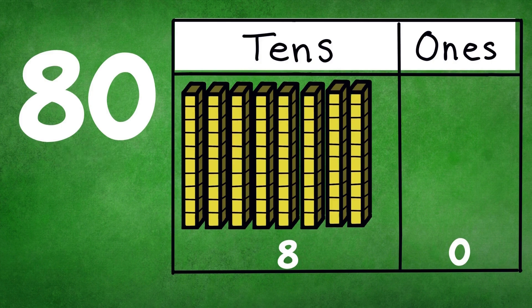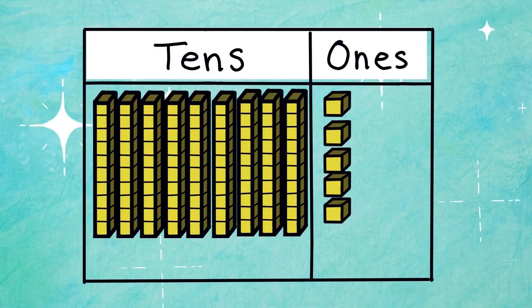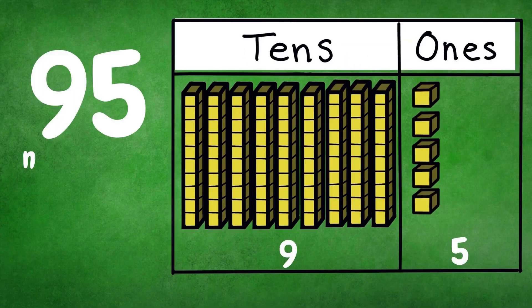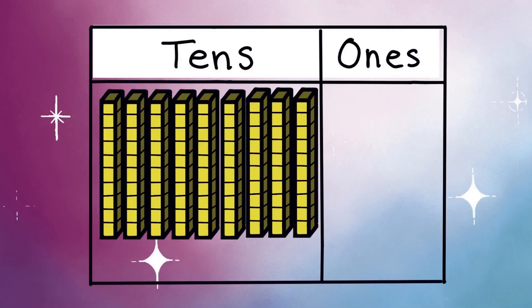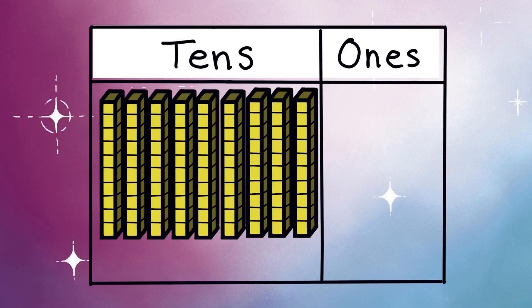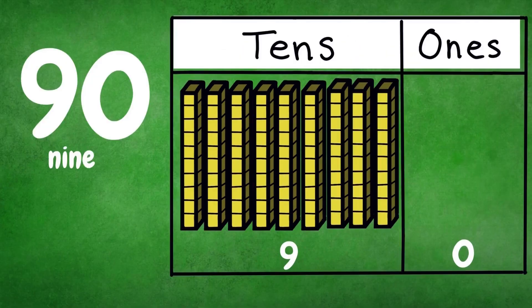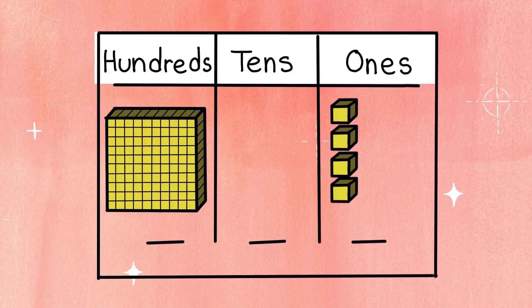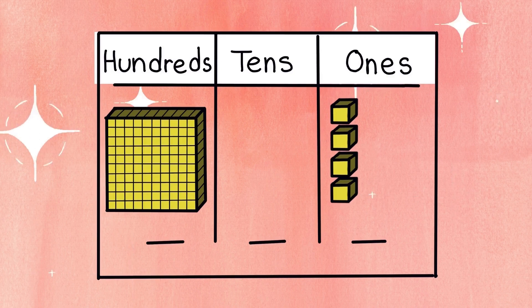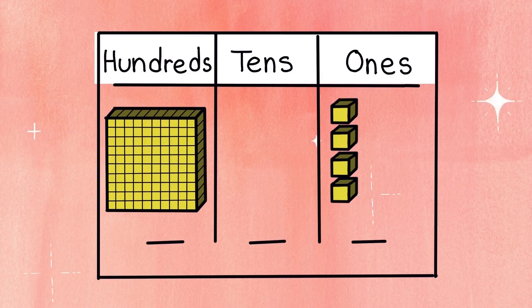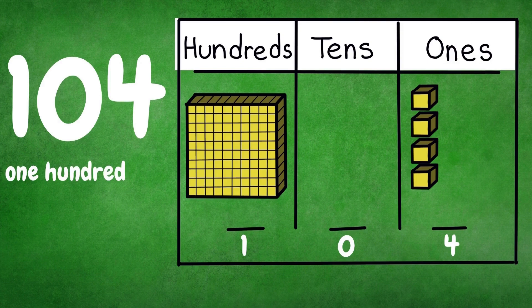Next number. It has two digits: 9 tenths and 5 ones. It is number 95. Good job. Next number. It has two digits: 9 tenths and 0 ones. Say it with me — it's number 90. Next number. It has three digits: 10 tenths and 4 ones. It is 104.